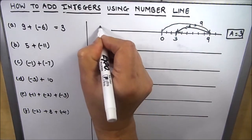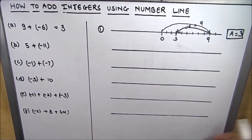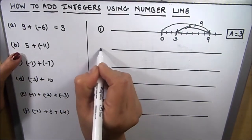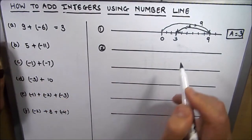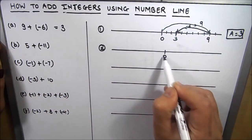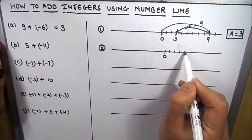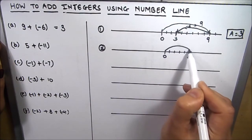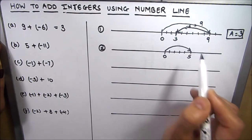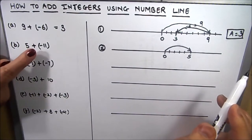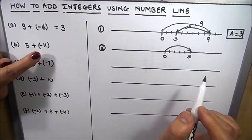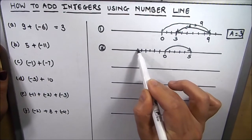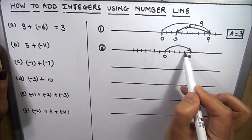Now we'll do the second example. First we have to take number 5, so we mark 0 here and take 5 divisions on the positive side. This is 5 — we move in the positive direction because it is plus 5. Then we have to do minus 11, so we are going to move 11 divisions on the other side.